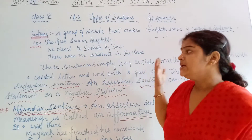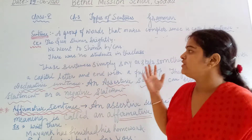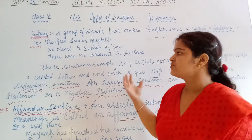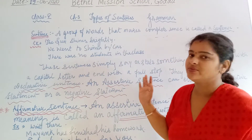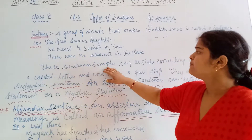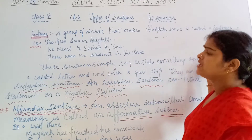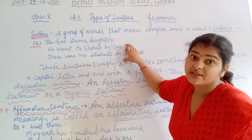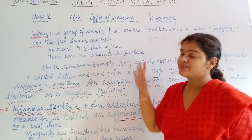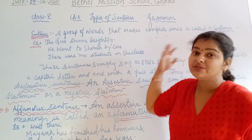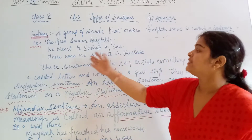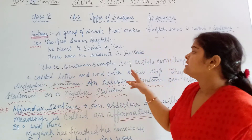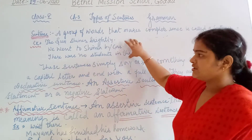In the second sentence: 'We went to Simla by car.' 'There were no students in the class.' It is very clear that no students were there in the class. These sentences simply say or state something, and they begin with a capital letter and end with a full stop. The first one states that the sun shines brightly; the second states that we have been to Simla by car, and there were no students in the class.